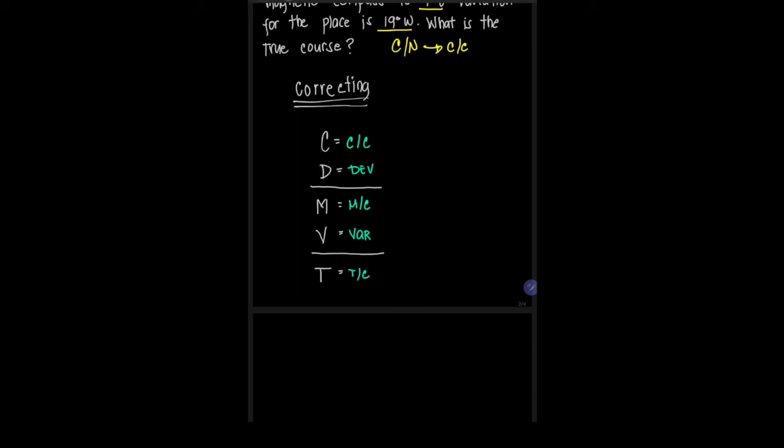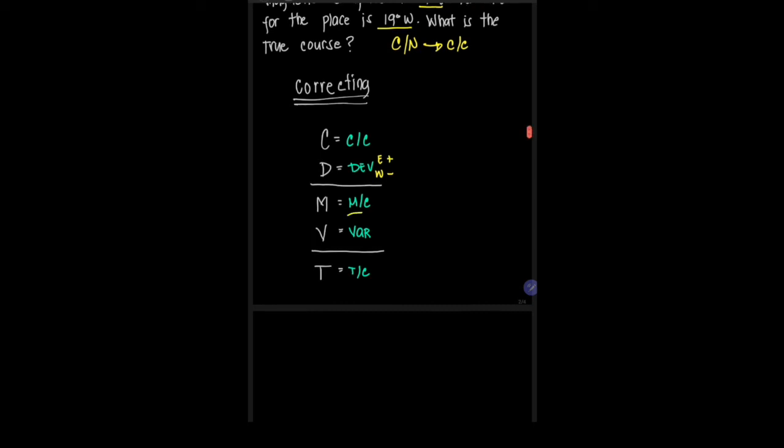In this formula, if the deviation is east, we're going to add the deviation to the compass course. If the deviation is west, we are going to subtract the deviation from the compass course. And the resulting value from that operation will give you the magnetic course.